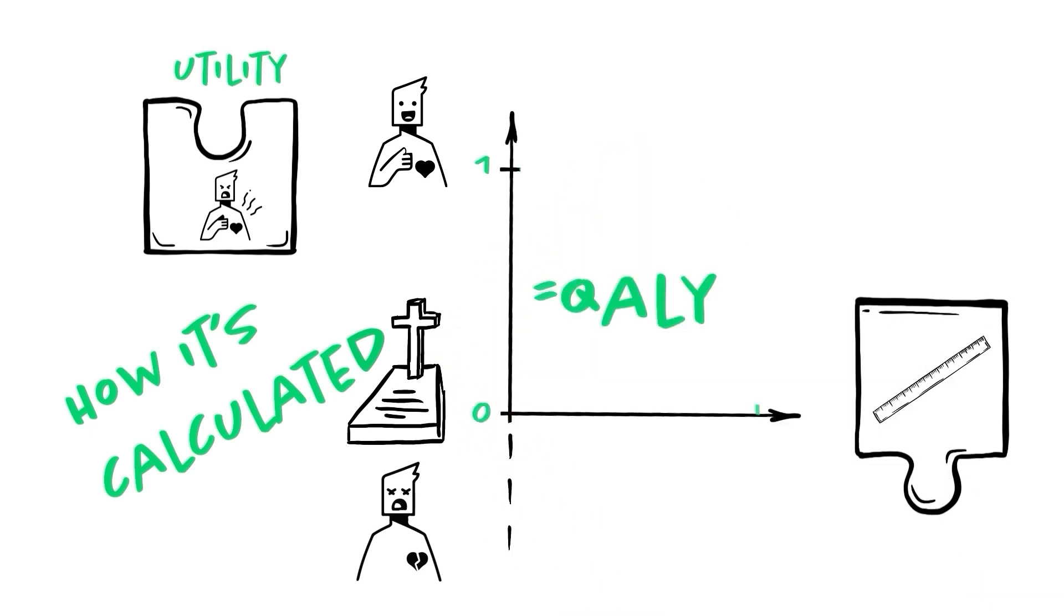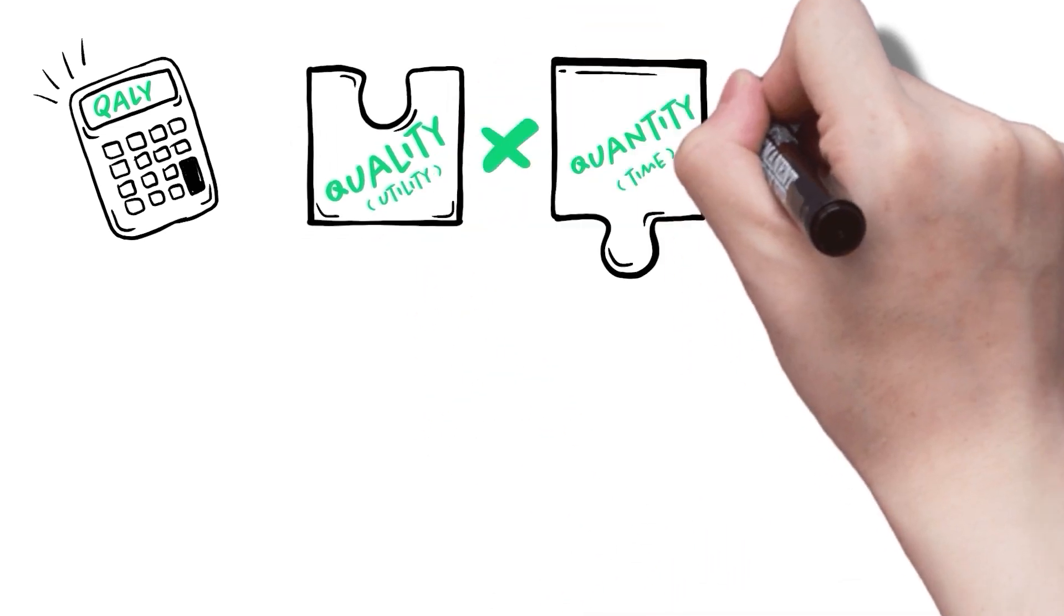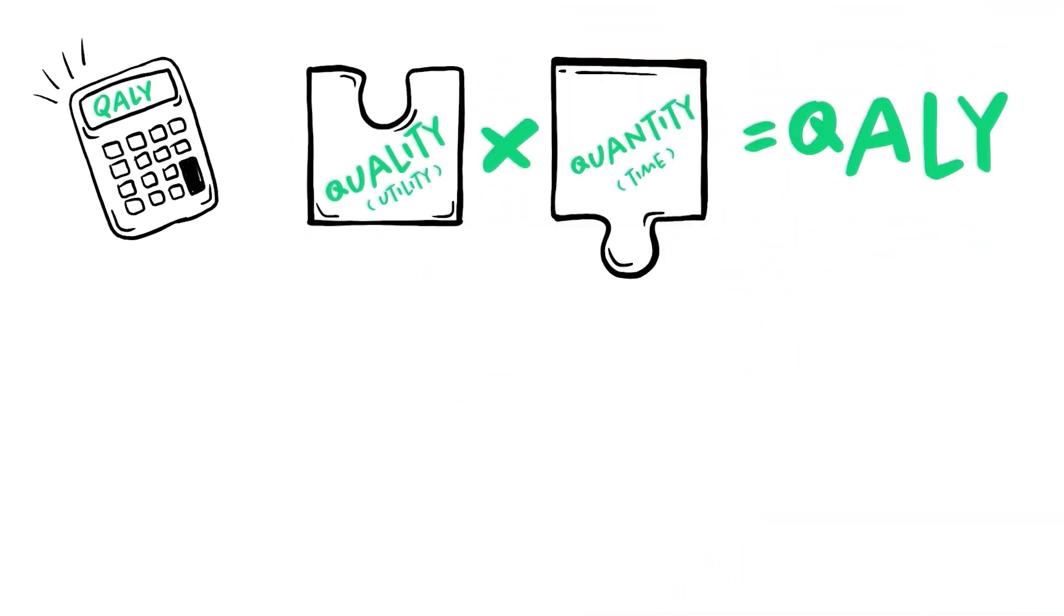Okay, two parameters. One, the utility for the quality of life and two, the duration for the quantity of life. This makes sense. And now, all you need is a simple formula. QALYs is equal quantity times quality, or in other words, QALYs equals duration times utility.